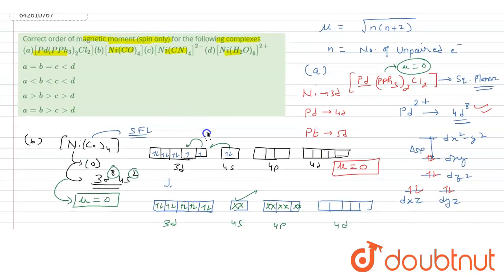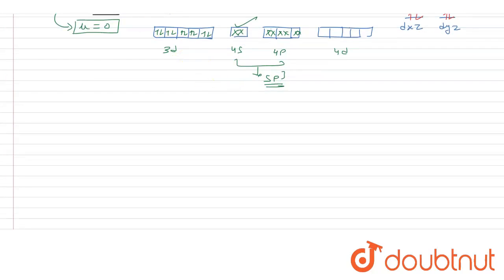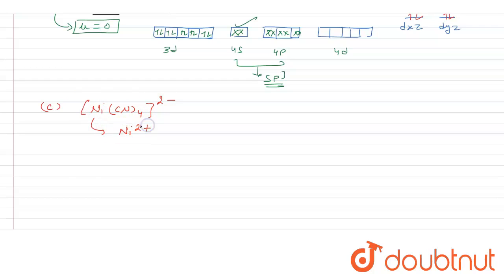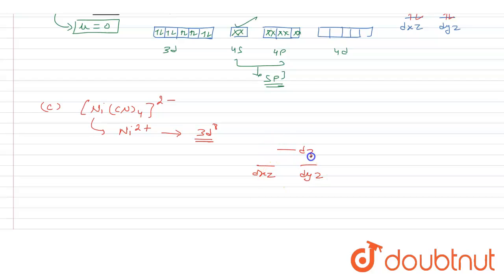Moving to the third complex, [Ni(CN)₄]²⁻. Cyanide is also a strong field ligand. Nickel is in +2 oxidation state, so its electronic configuration is 3d8. Because cyanide is a strong field ligand, it forms a square planar complex. The square planar orbital diagram has dxz, dyz at the base, then dz², then dxy, and dx²-y² at the top.